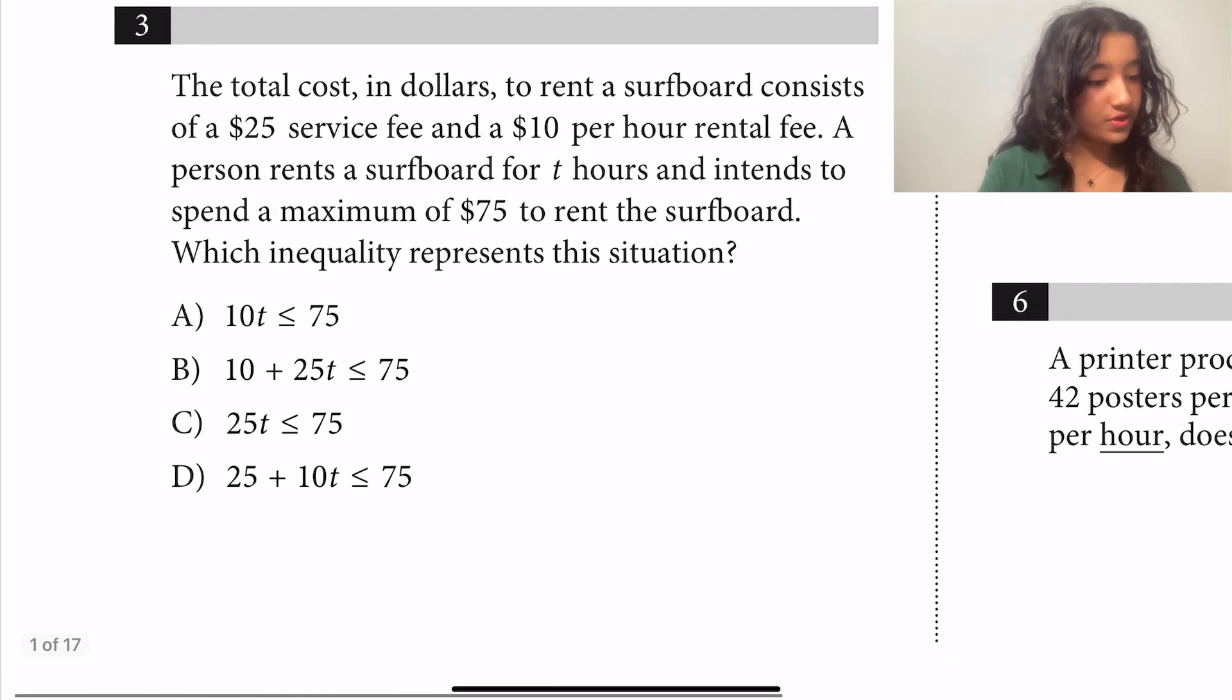For number three, the total cost in dollars to rent a surfboard consists of a $25 service fee and a $10 per hour rental fee. A person rents a surfboard for t hours and intends to spend a maximum of $75 to rent the surfboard. Which inequality represents this situation?